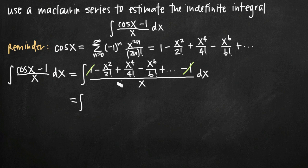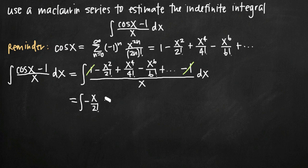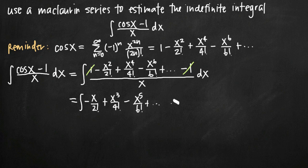When we take negative x squared over 2 factorial and divide by x, the x in the denominator cancels with one of the x's in the numerator, leaving negative x to the first power divided by 2 factorial. When we divide x to the fourth over 4 factorial by x, we're left with plus x cubed over 4 factorial. The x in the denominator is just reducing each term's degree by one — so 2 became 1, 4 became 3 — and we'll have negative x to the fifth over 6 factorial, plus dot dot dot, dx.